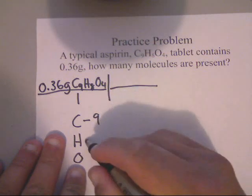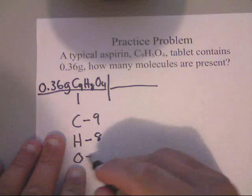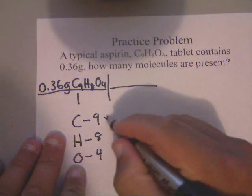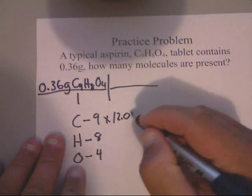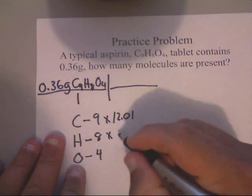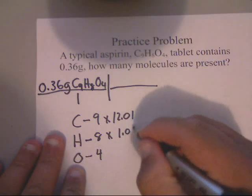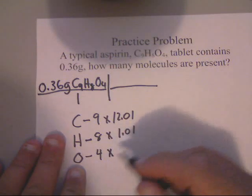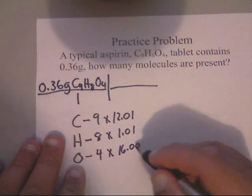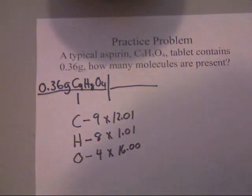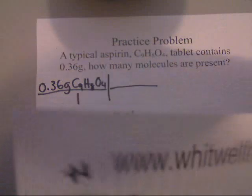You've got carbon, you've got hydrogen, and you've got oxygen. Now, you've got 9 carbons, 8 hydrogens, and 4 oxygens. Carbon is 12.01. Hydrogen is 1.01. And oxygen is 16.00.